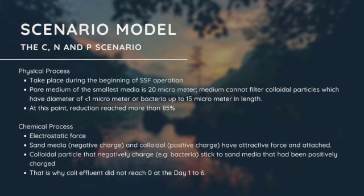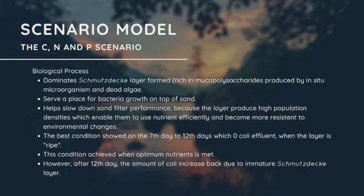Next one is the biological process. It dominates when smudgered layer forms, which is rich in mucopolysaccharides produced by in situ microorganisms and dead algae. So it serves as a place for bacteria growth on top of the sand and helps the slow sand filter performance because the layer produces high population densities which enables them to use nutrients efficiently and become more resistant to environmental changes. The best condition showed on day 7 to 12, which is zero coli effluent when the layer is ripe. This condition is achieved when optimum nutrients are finally met. However, after 12 days the amount of coli increases back due to immature smudgered layer.